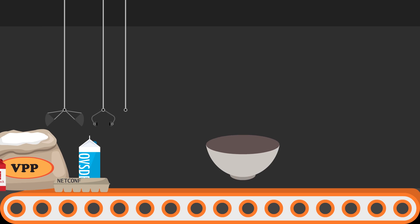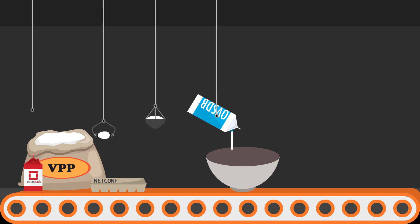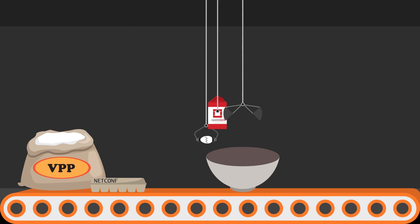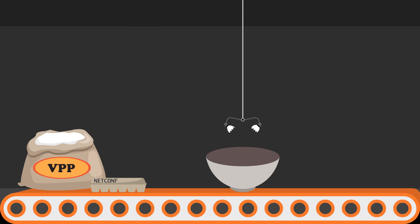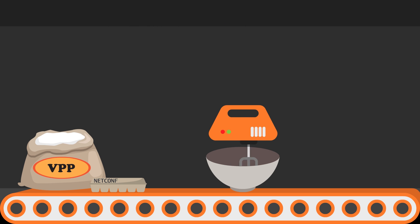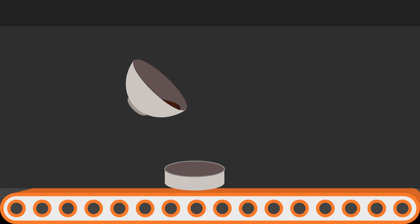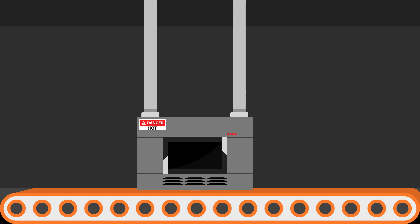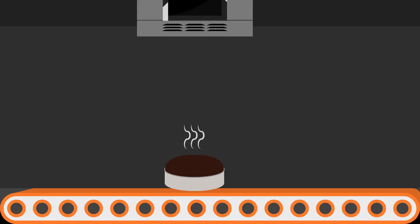Our platform bakes the ingredients together to make a use-case specific recipe. The recipes are then combined with a stream to create a downloadable distribution that solves a specific business use case.